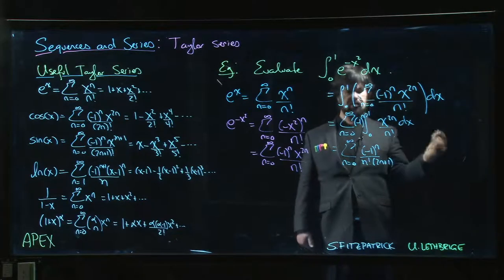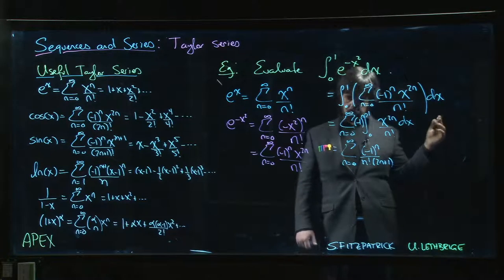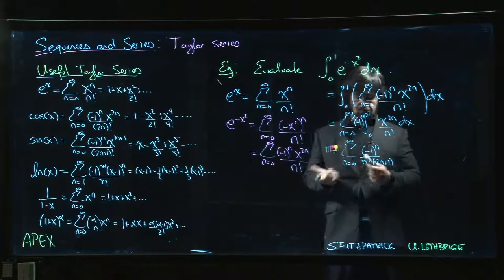Actually, that's it. 1 to the 2n plus 1 is 1. 0 to the 2n plus 1 is 0. There it is. We have our series.